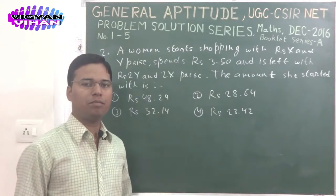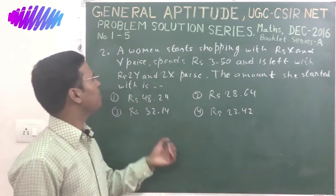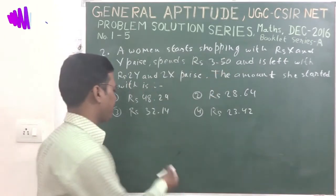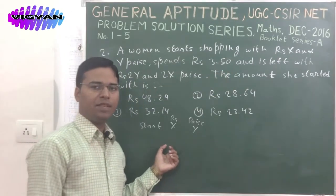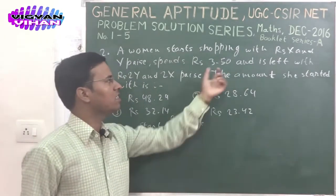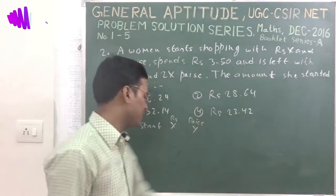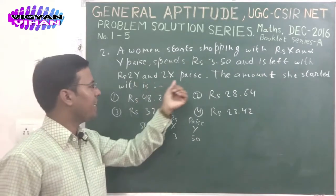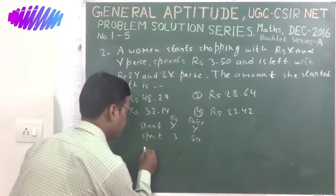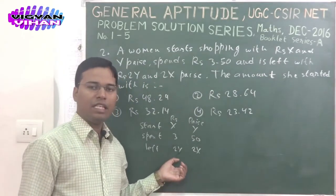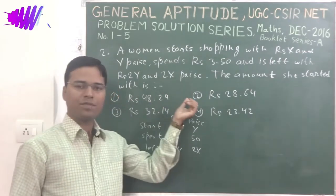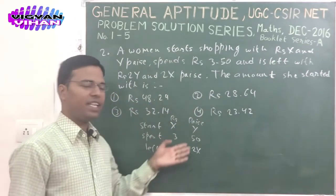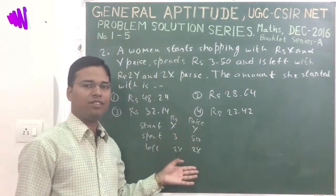Here is our next problem, problem number 2. A woman starts shopping with x rupees and y paise, then she spent 3.50 rupees, and is left with rupees 2y and 2x paise. There are 4 options given; we will check which option satisfies those conditions.